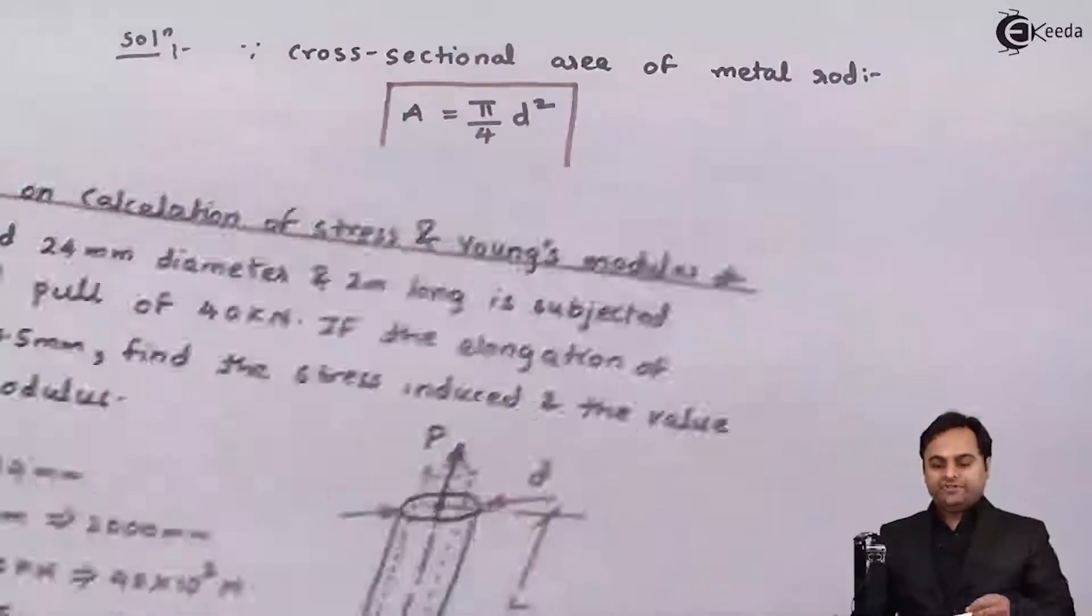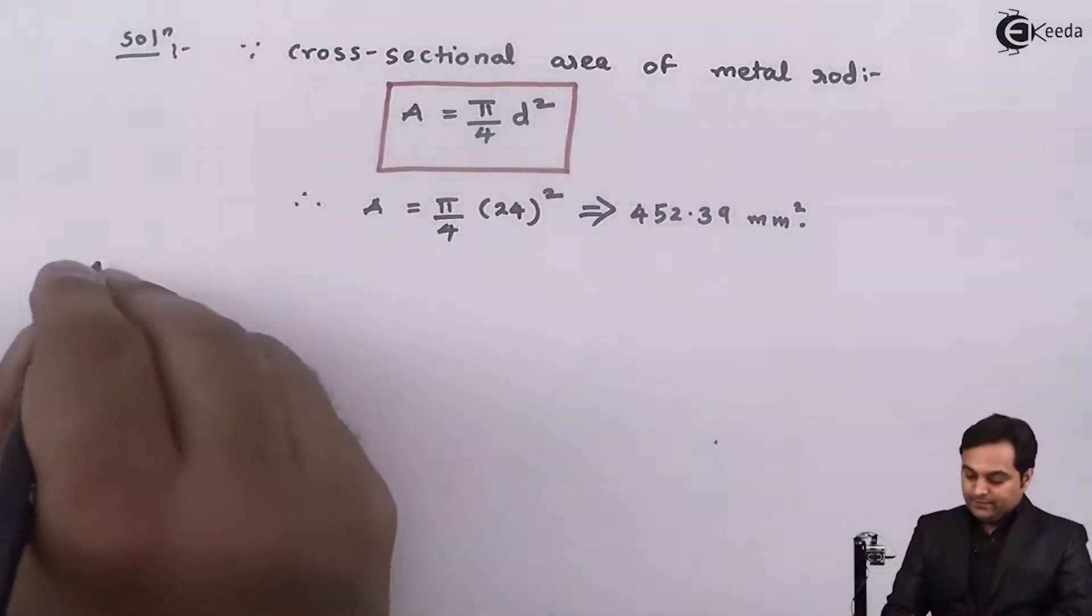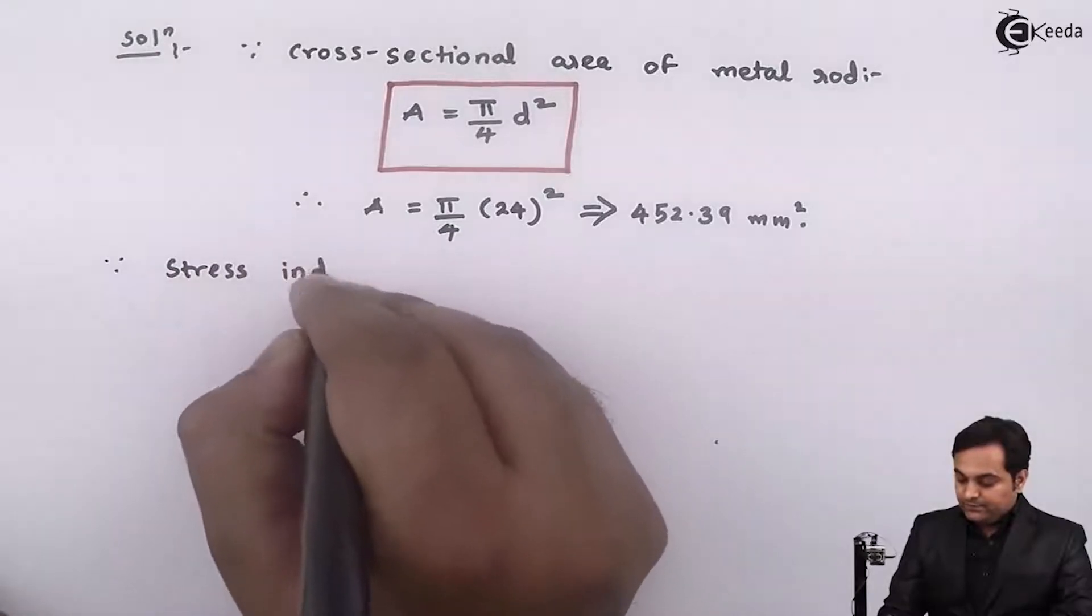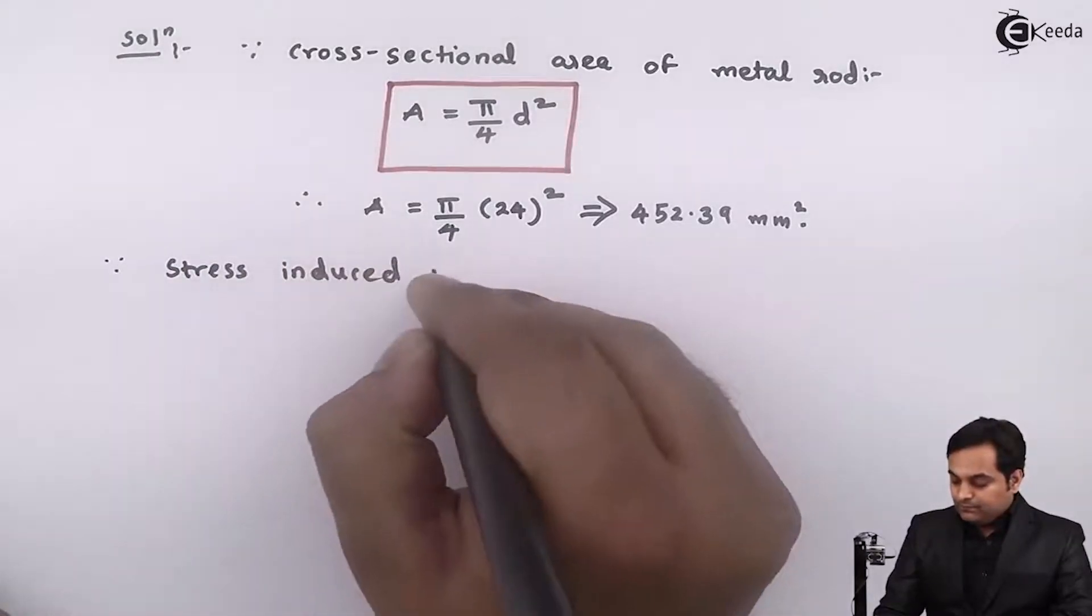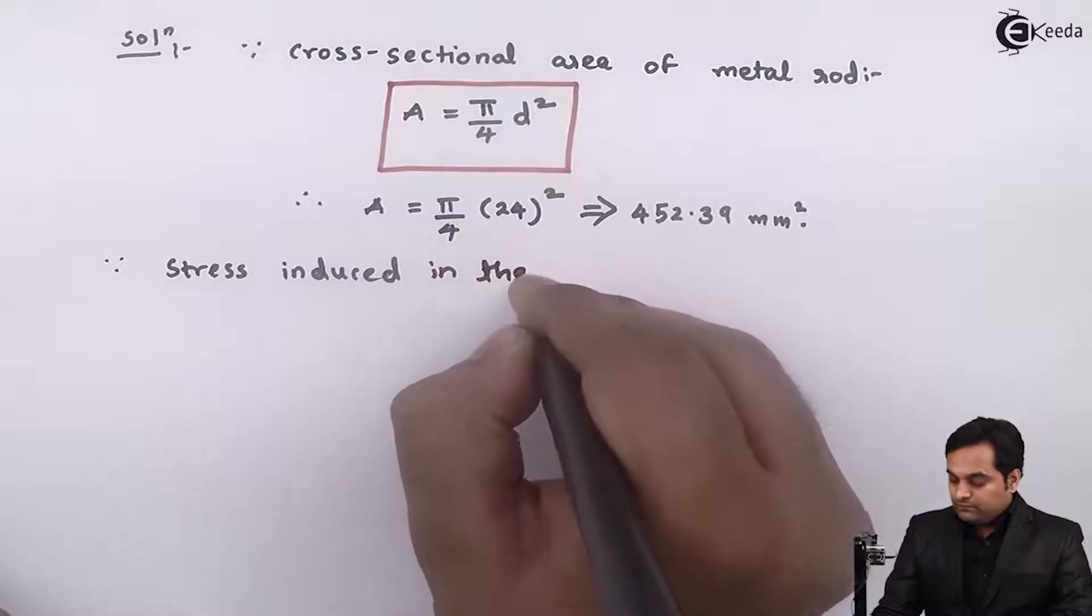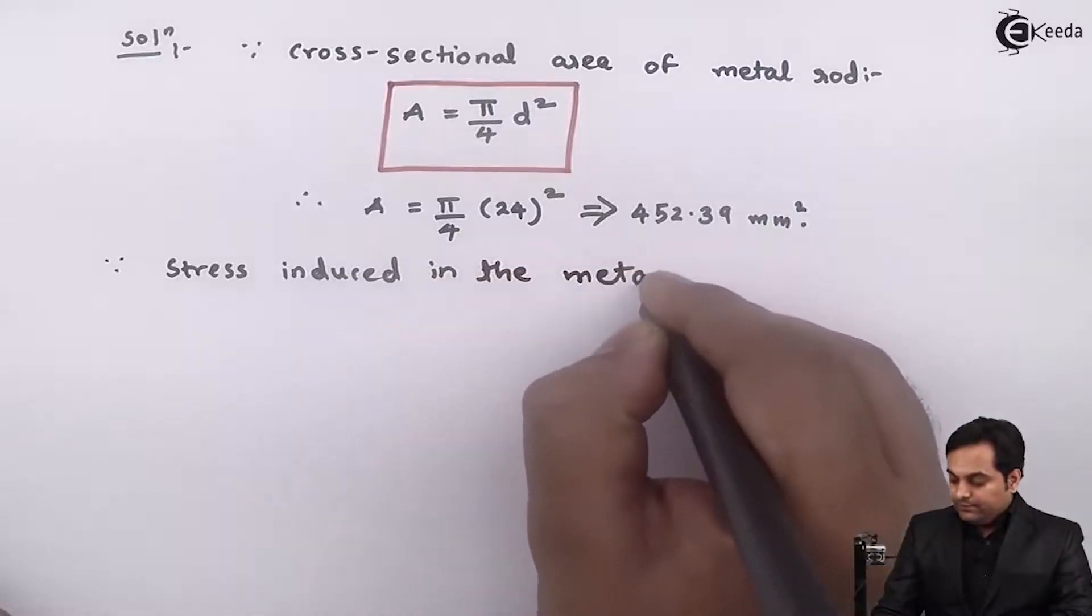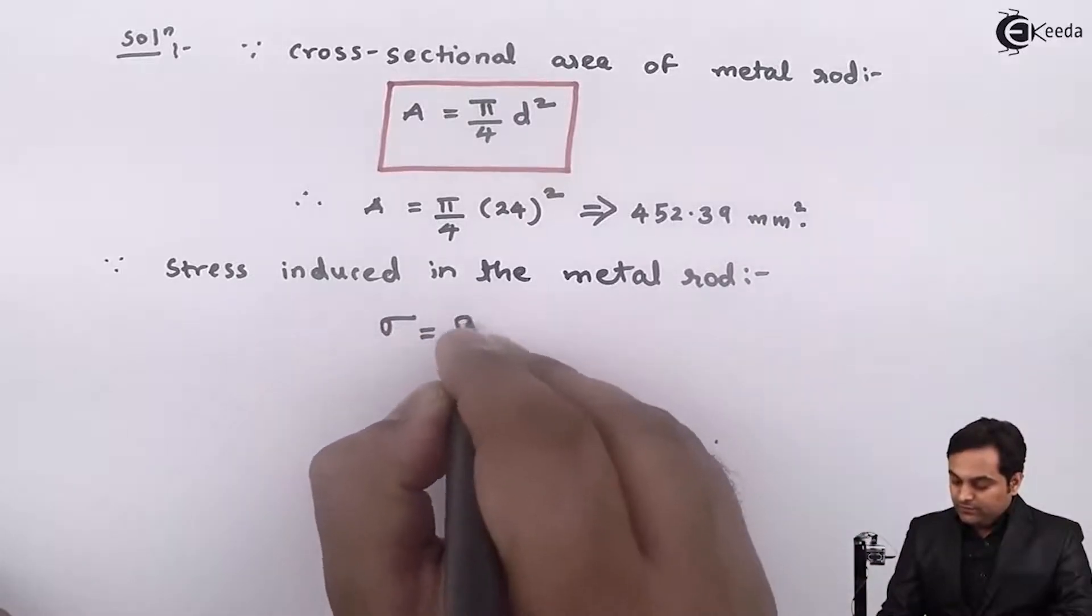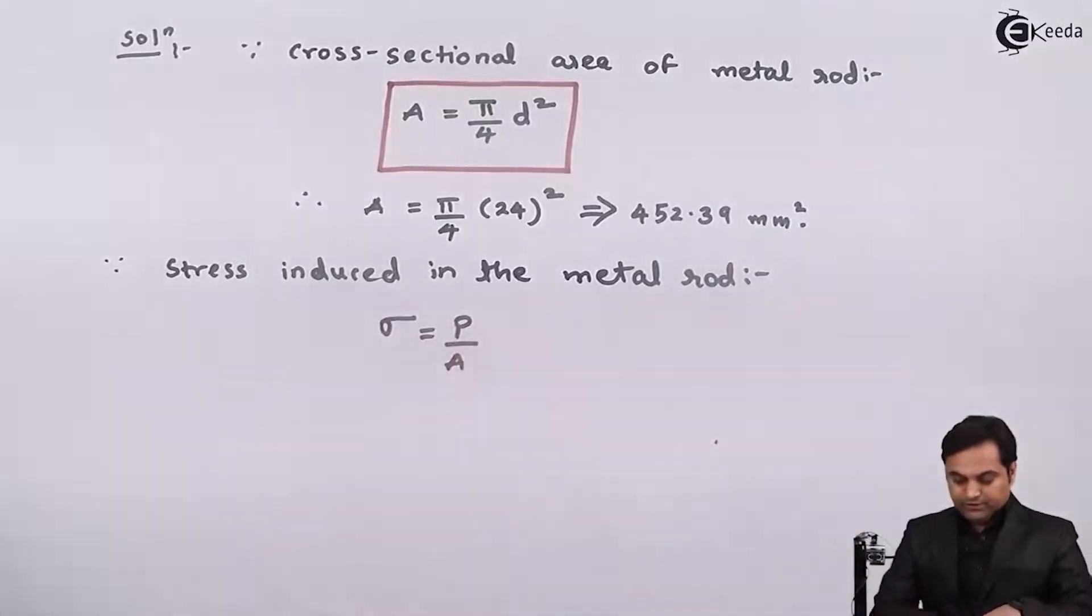So I will use the formula of stress, that is, since stress induced in the metal rod, σ is equal to load upon area.